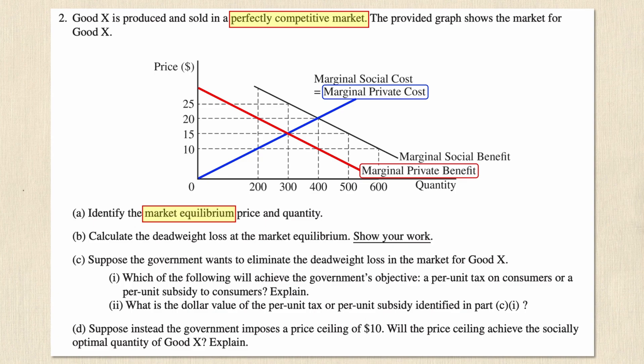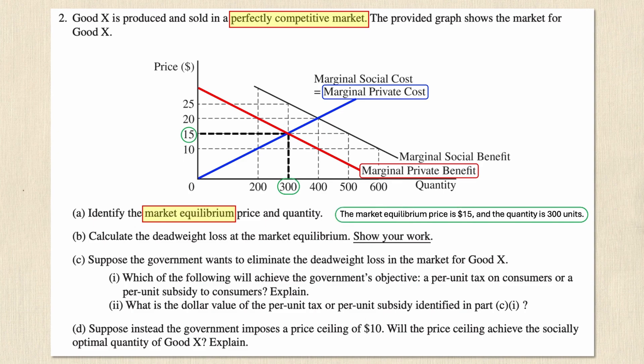Setting MPC equal to MPB, I look at where they intersect and you can see very clearly it's at $15 and a quantity of 300. For that full mark I need to state that the market equilibrium price is $15 and the quantity is 300 units. Nice and easy.